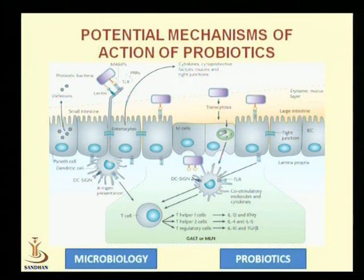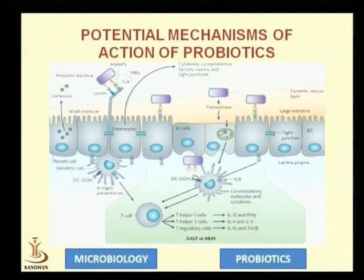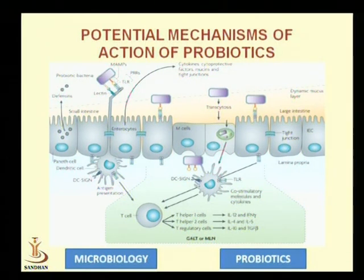For example, for controlling inflammatory diseases, T cells can be differentiated into Th2 cells, which start to produce anti-inflammatory cytokines like interleukin-4, interleukin-2, and interleukin-10.